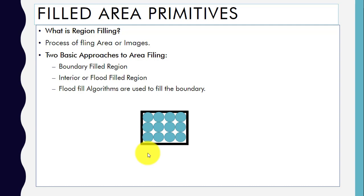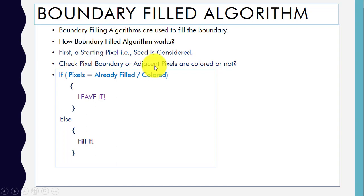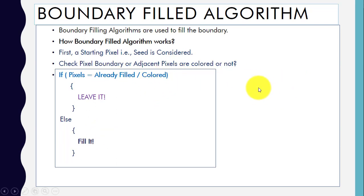How does the boundary fill algorithm work? First, we need a seed — the starting pixel we are going to consider. After selecting the seed, we check the boundary and adjacent pixels to see if they are already colored or not. If the pixels are already filled or colored, we leave them; otherwise, we fill them.